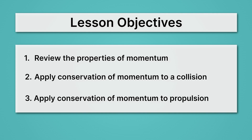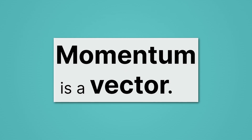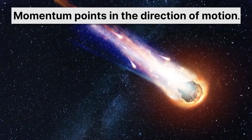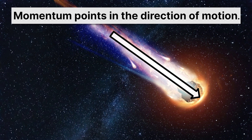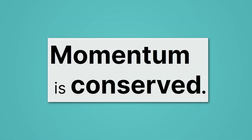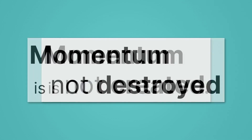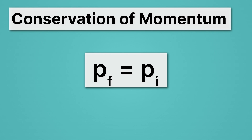Let's review momentum. First, recall that momentum is a vector — that means it has a direction, and momentum points in the direction of motion. In the case of a comet, momentum would be pointing directly towards its direction of motion. Also remember that momentum is conserved, meaning momentum is not created and not destroyed. We can express that mathematically as P_F equals P_I, where P means momentum. This is saying that the final momentum is equal to the initial momentum, and this is where we're going to start all the problems in this lesson.